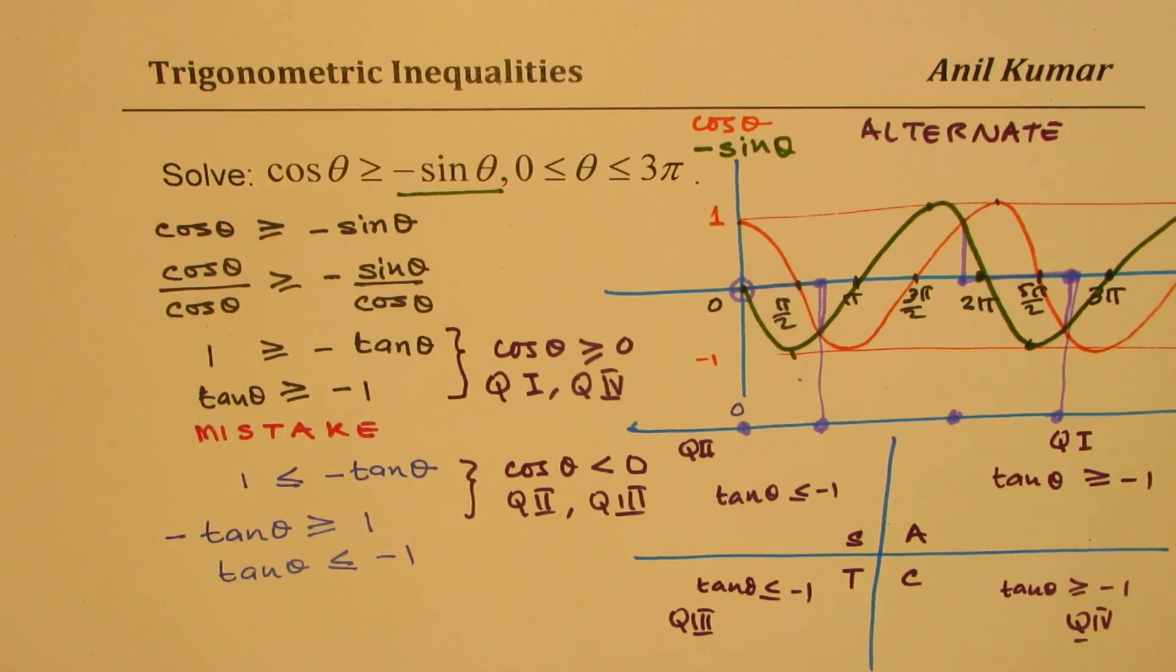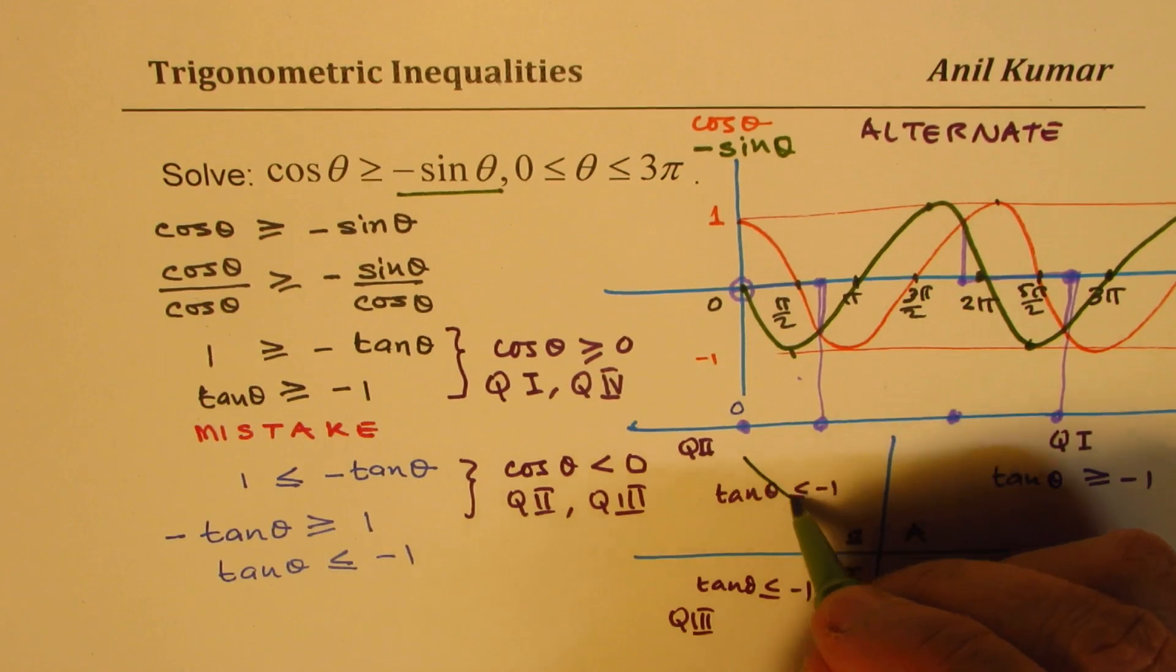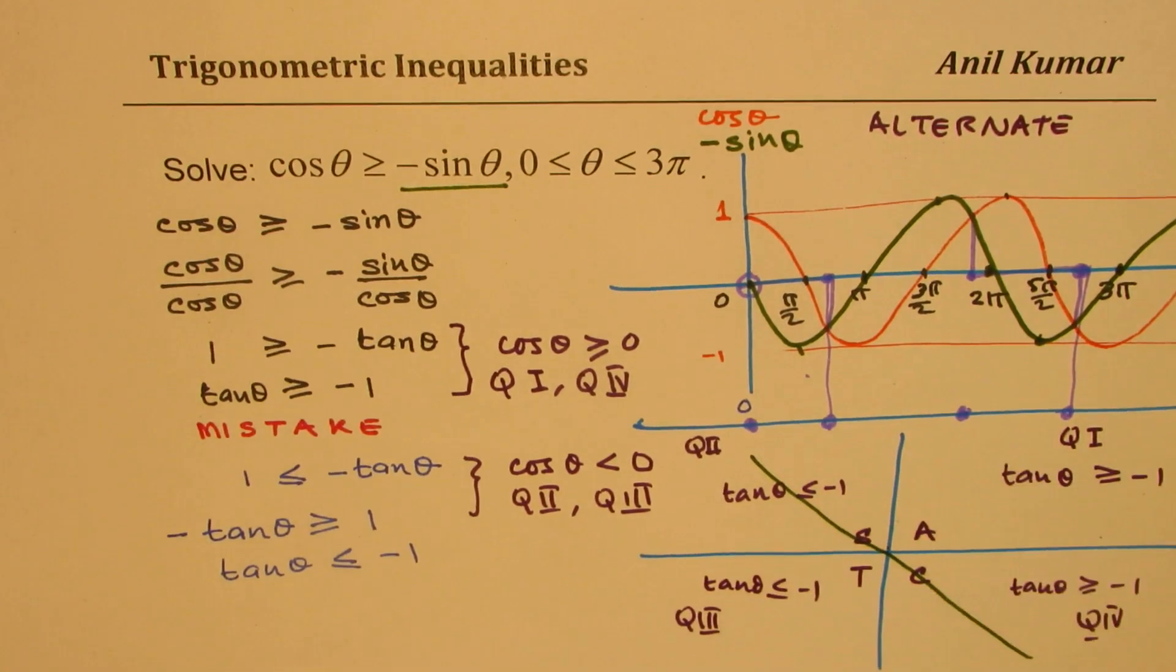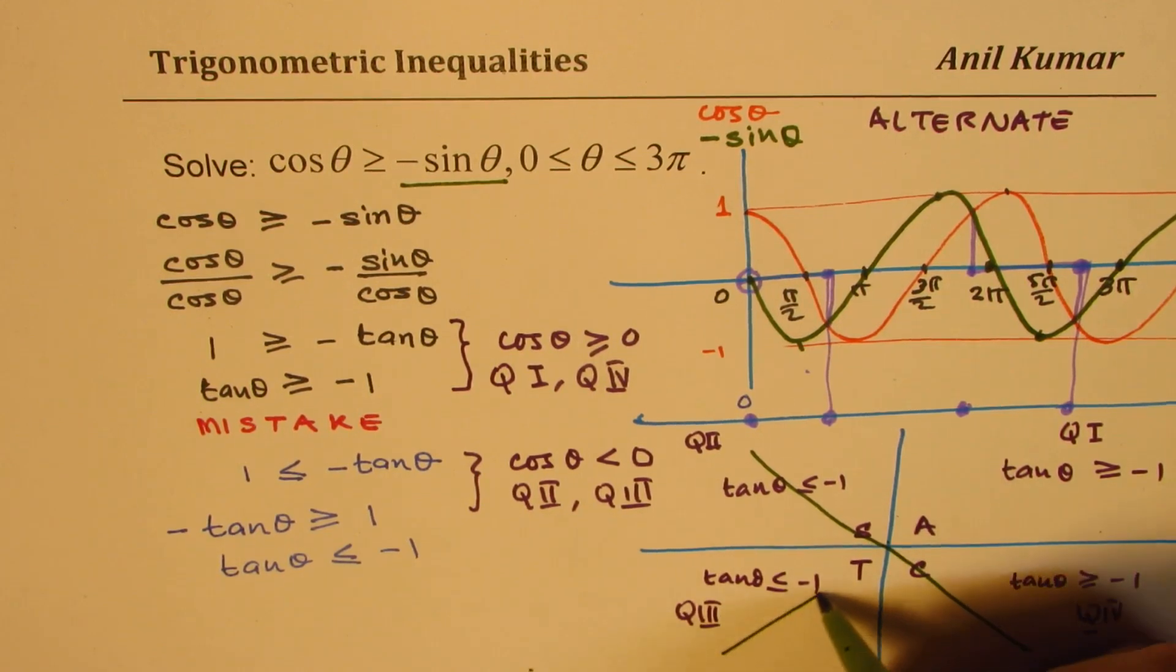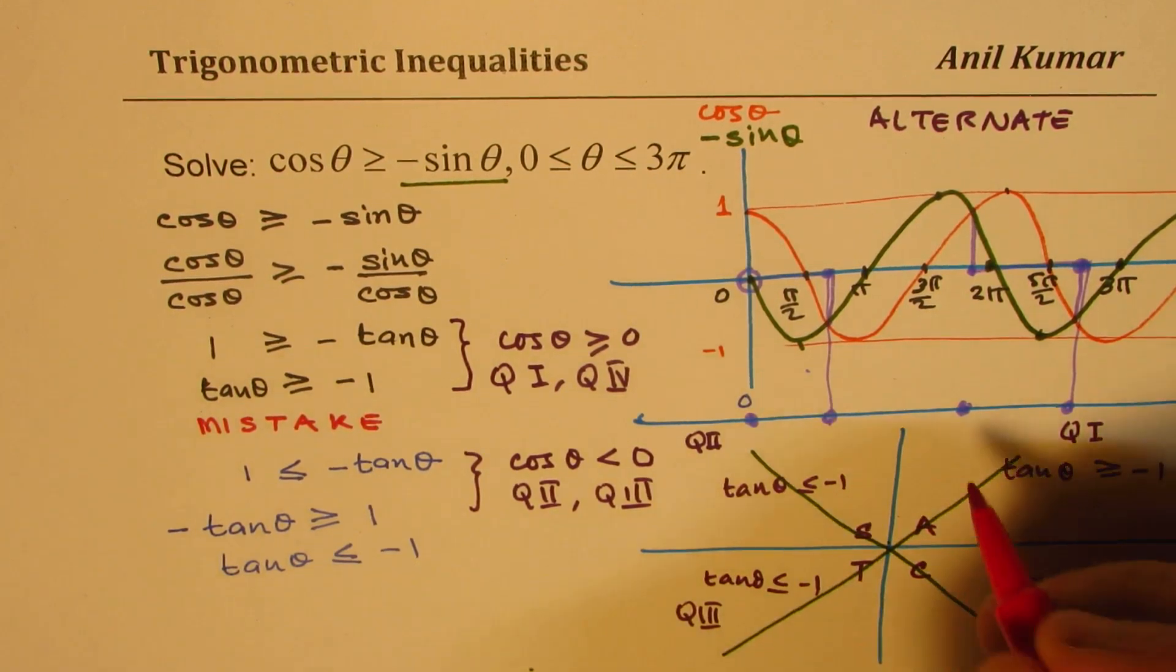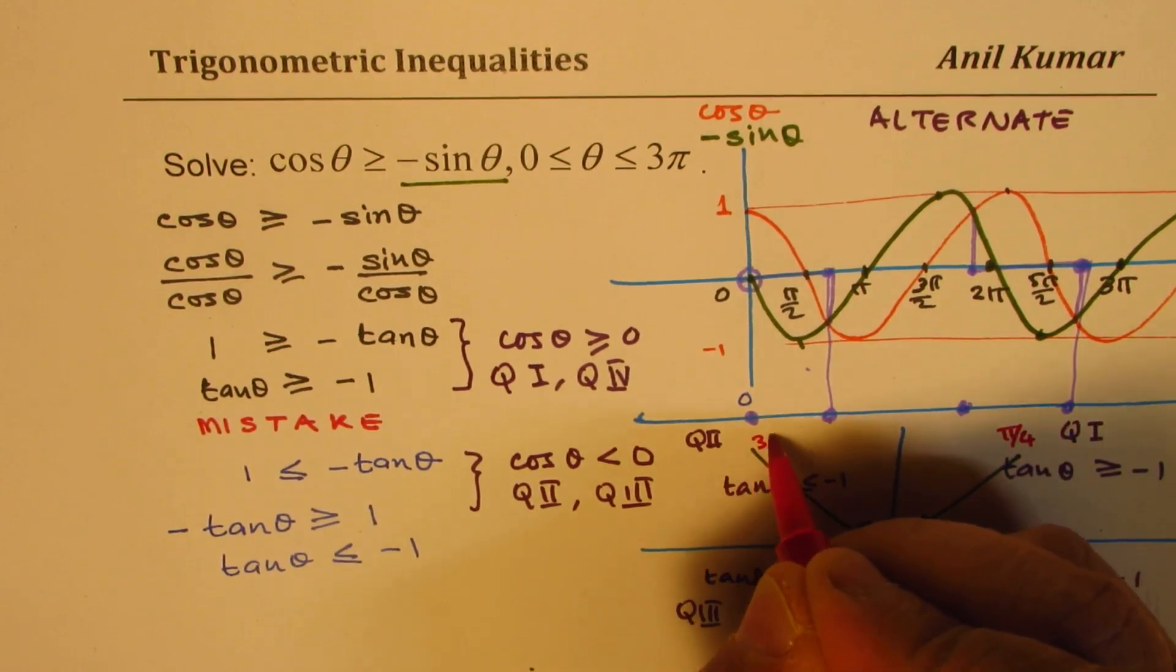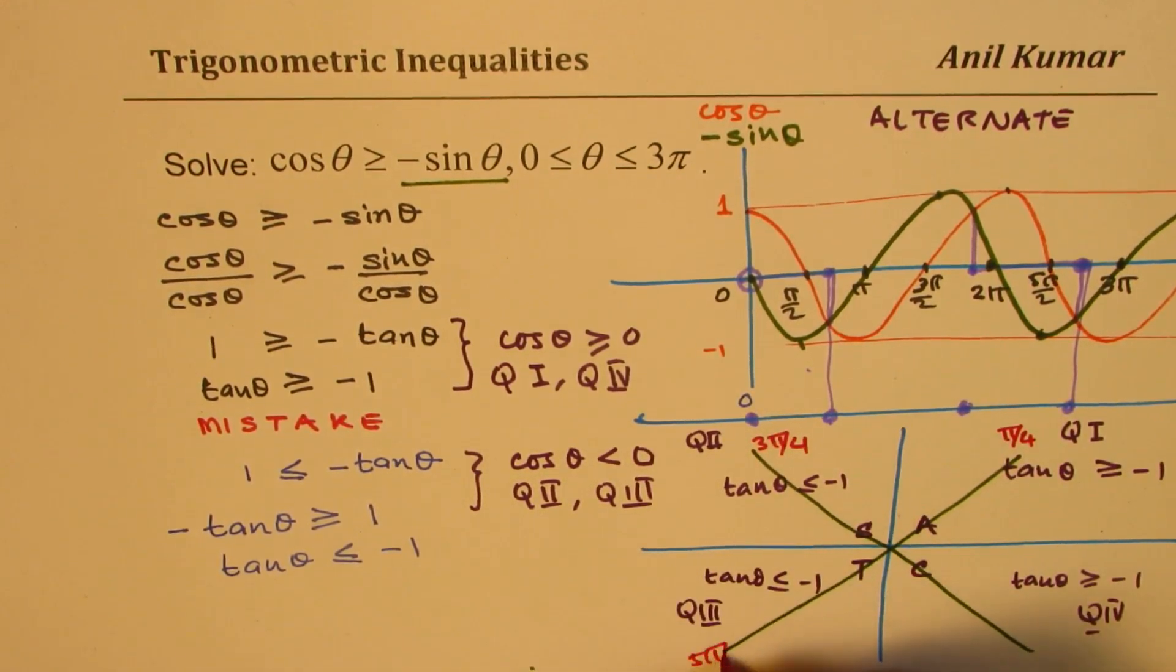We know tan θ = 1 or -1 where? Let's draw the lines where tan θ is 1 or -1. These are at π/4 or 45 degrees. This is π/4, 2π/4, 3π/4, 4π/4, 5π/4, 6 and then 7π/4. These are your angles.